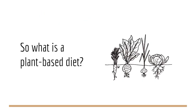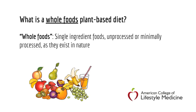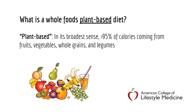So what exactly is a plant-based diet? The full term is a whole foods plant-based diet. Whole foods meaning single ingredient foods, unprocessed or minimally processed as they exist in nature. Plant-based, in its broadest sense, means consuming at least 95% of our calories from fruits, vegetables, whole grains, and beans. Typically, when working on reversing diabetes in the office, we recommend going 100% until we start to see the results we're looking for. For a lot of people, complete abstinence is easier than perfect moderation when it comes to a plant-based diet.